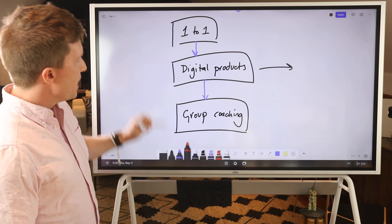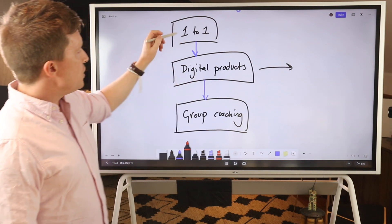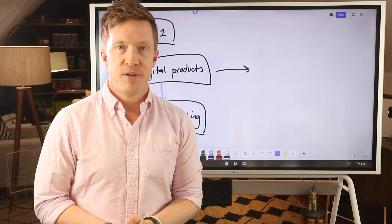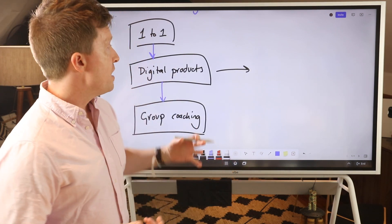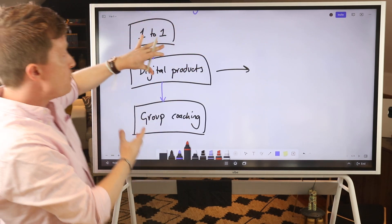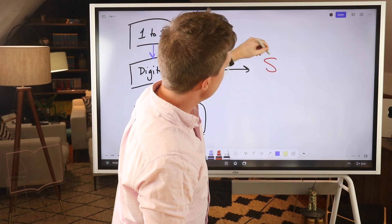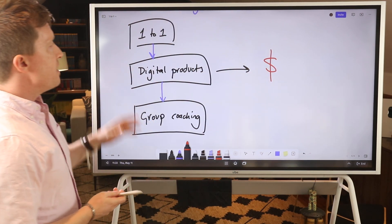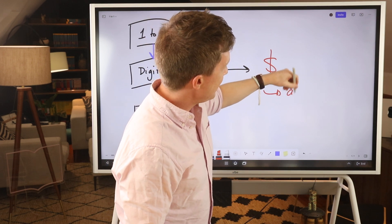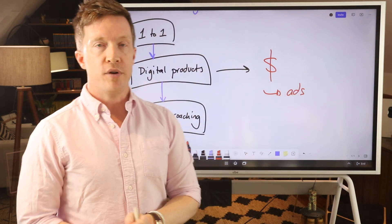It works because when you go to digital products, you have very high profit margins, right? It's pure net free cash flow. So you've got your audience enough to sell one-to-one. You then offer that same audience digital products that kicks off cash. And then what you can do with that cash is you invest it into ads to grow your audience.